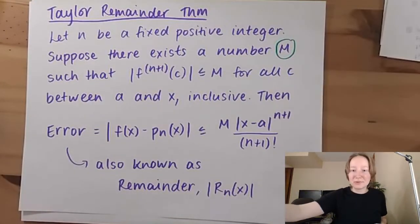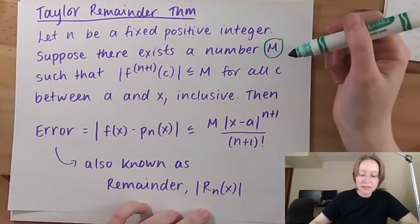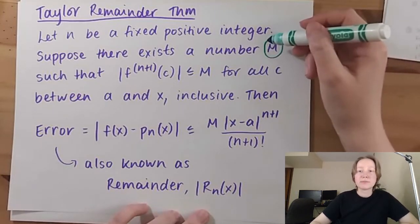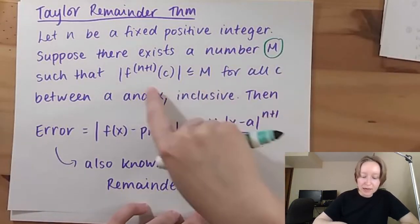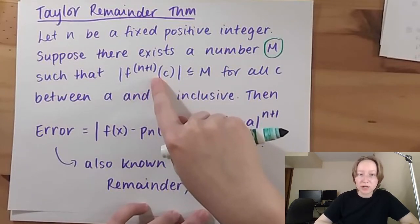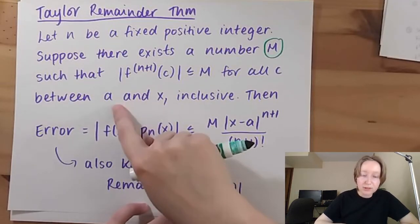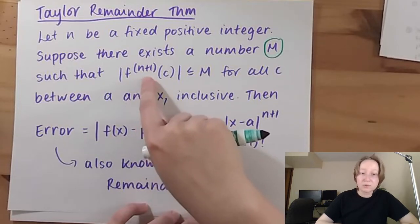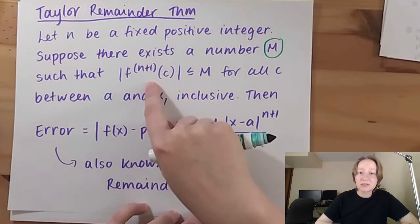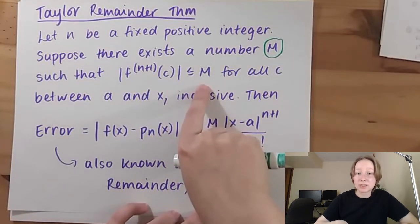I took the liberty of writing this down beforehand because it's a lot of writing. The Taylor Remainder theorem states the following: we let n be a fixed positive integer — n is the degree of my Taylor polynomial — and then I let there be a positive number M such that it bounds my n+1 derivative of the function f at c for all c between a and x inclusive. In that interval we find the maximum value of that derivative, and my derivative is bounded by this capital M, which is a constant.